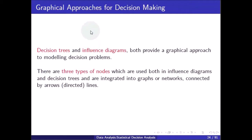Graphical approaches for decision making: decision trees and influence diagrams both provide a graphical approach to modeling decision problems. There are three types of nodes which are used both in influence diagrams and decision trees and are integrated into networks connected by arrows.